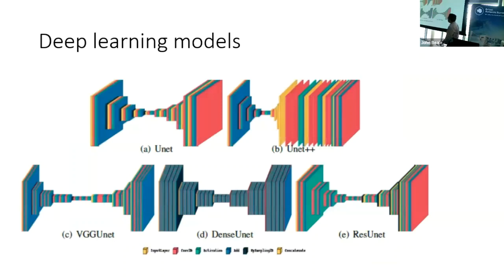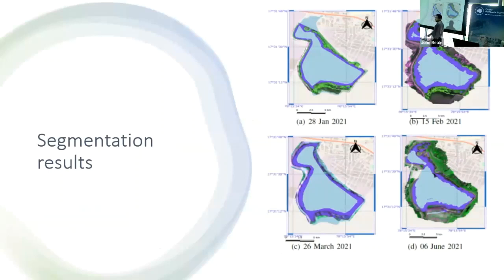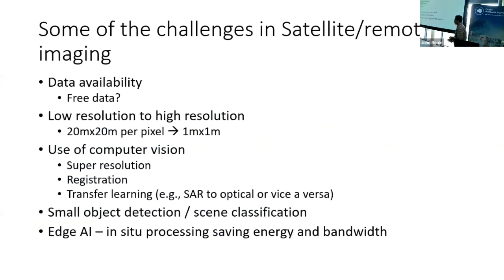Once labeled, we perform image segmentation using deep learning techniques, having tried multiple architectures and modifications. The segmentation map shows the water hyacinth in green, water in blue, and other vegetation separately. We achieved very high resolution results, but that is not the end of the story.